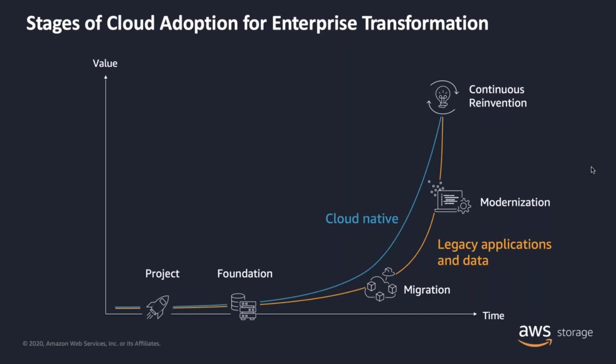The good news is that at AWS, we have a lot of resources that can help you — storage experts, professional services experts — people who know our tools inside and out to help make that migration process as efficient as possible. The real reason many customers tell us they want to migrate to AWS is to modernize their applications and get to the last phase: continuous reinvention and innovation. Many customers we talk to do not consider themselves cloud-native. There's a large majority of enterprises that do need to consider data migration and application migration, and that's what we're here to talk about today.